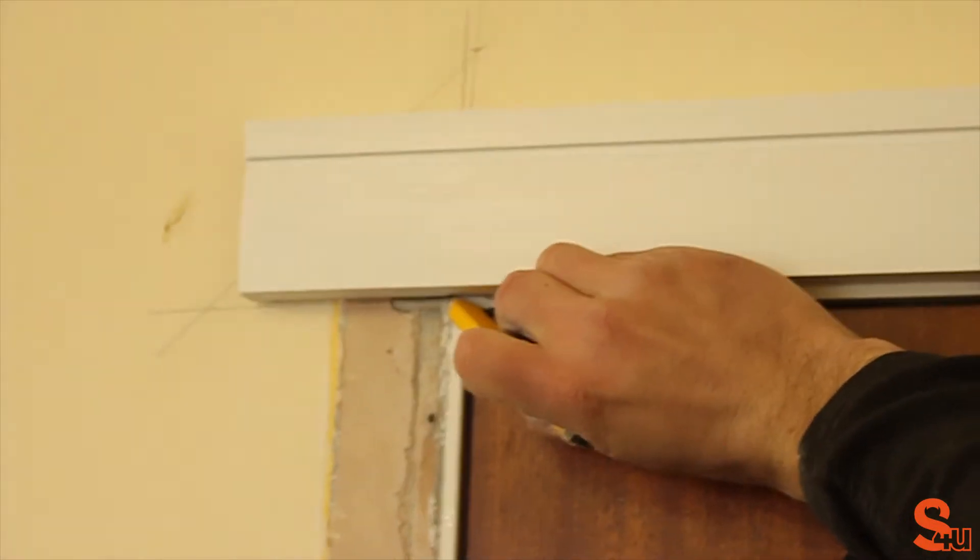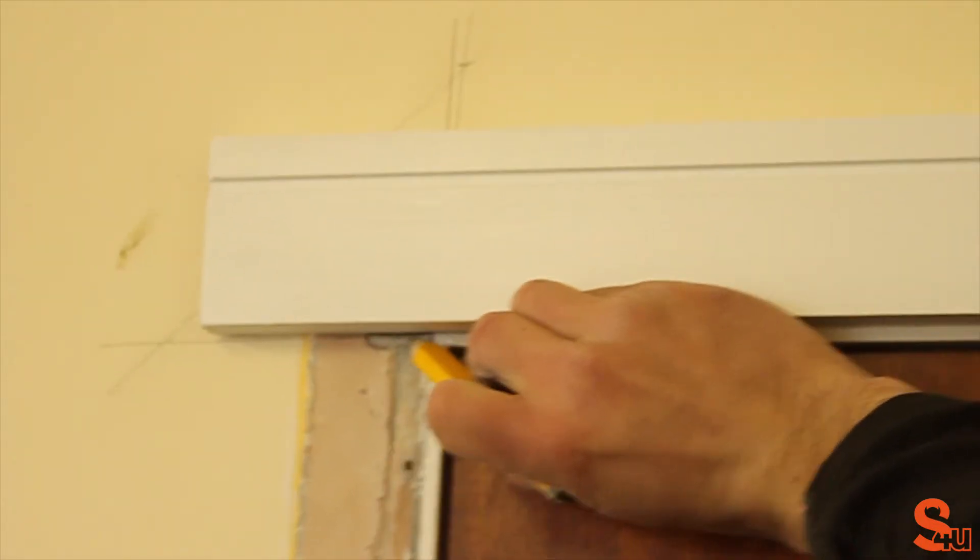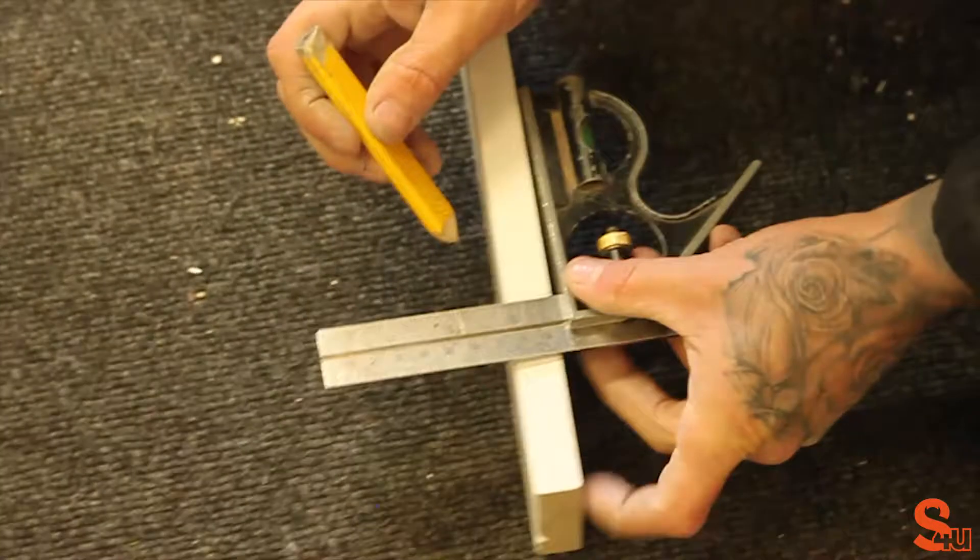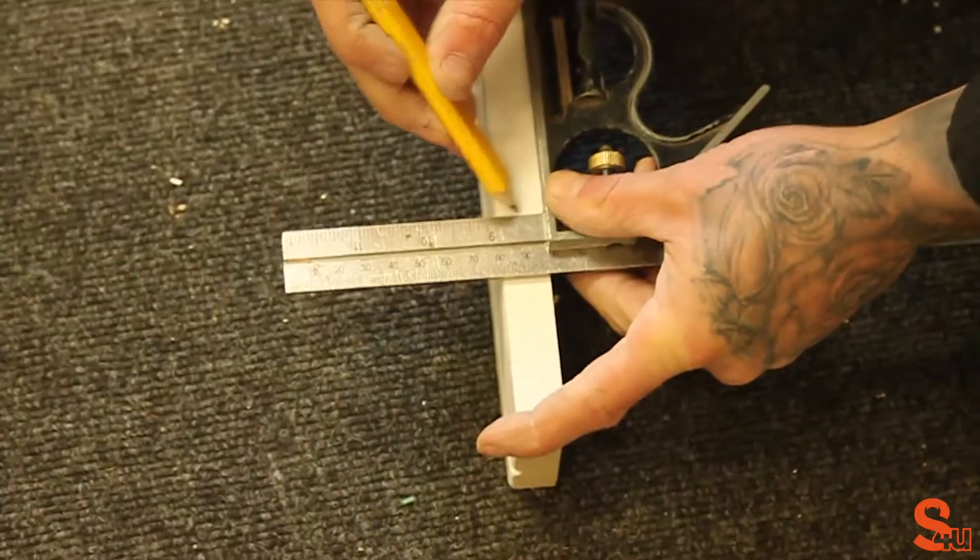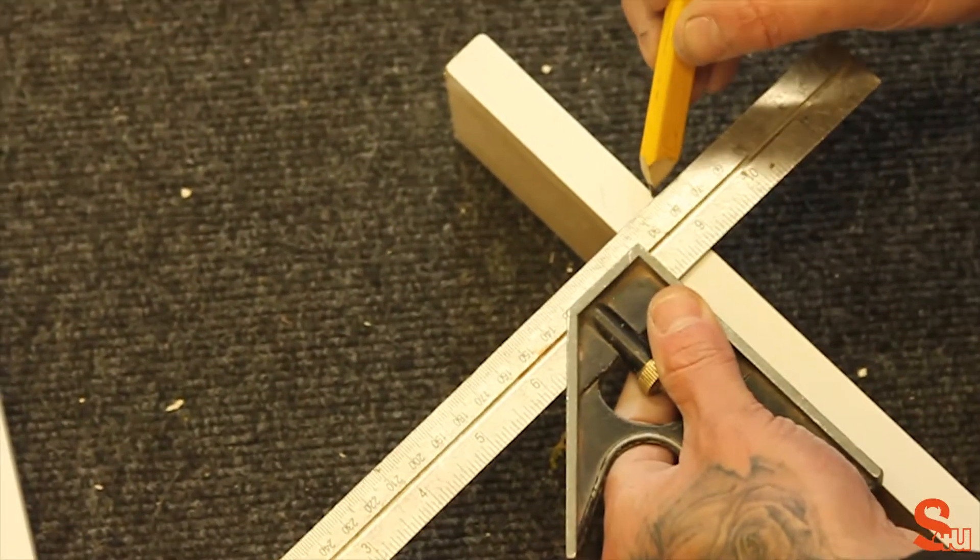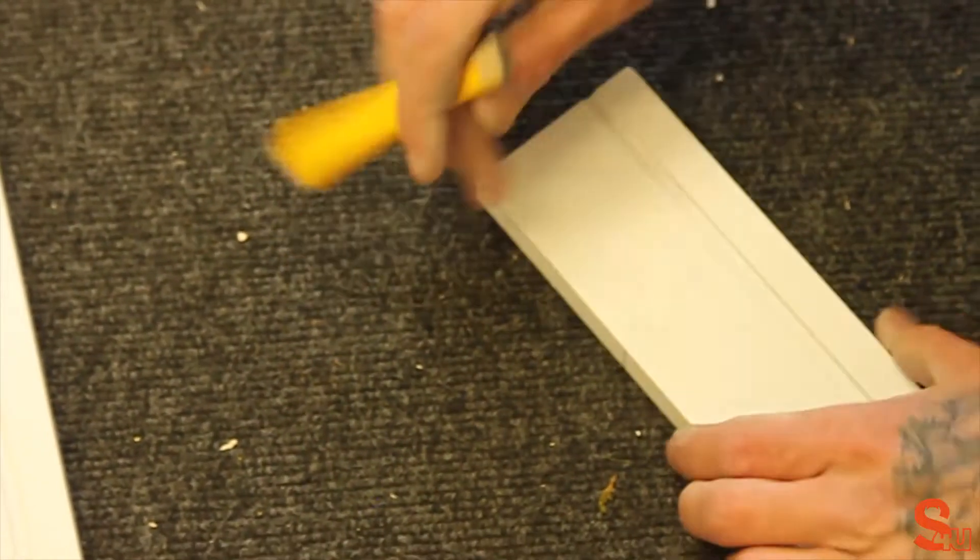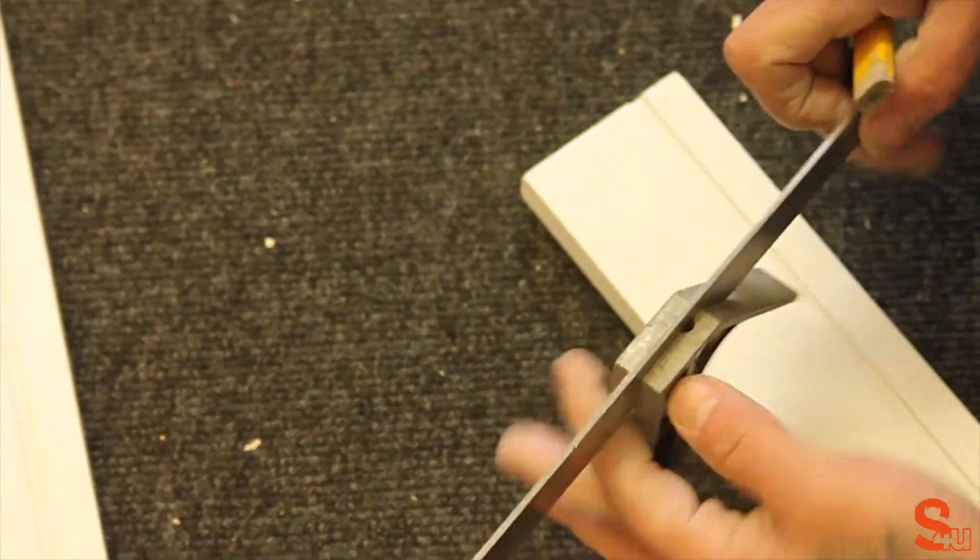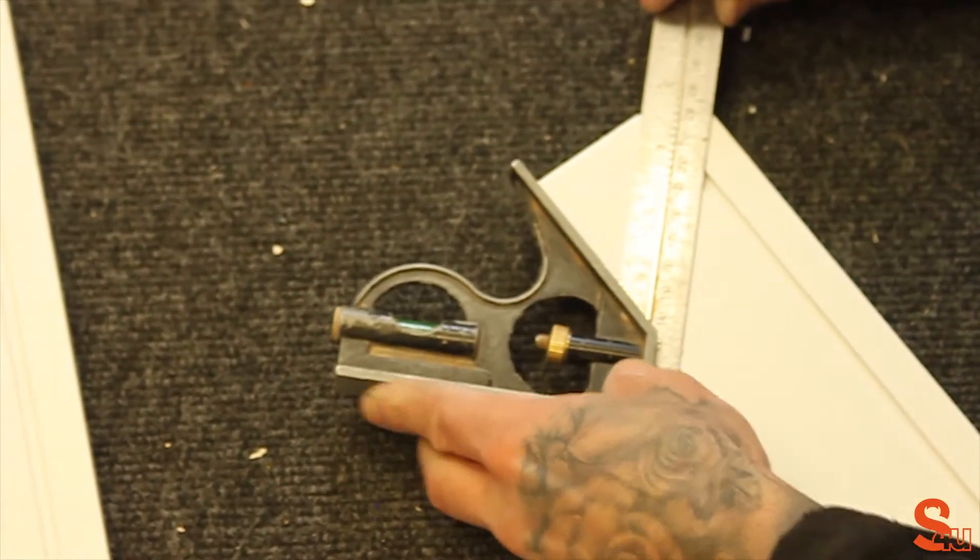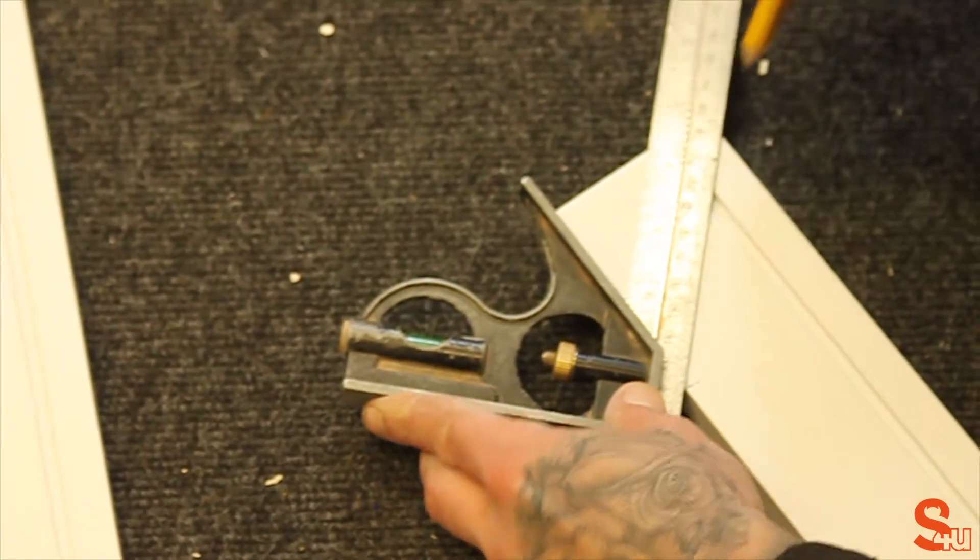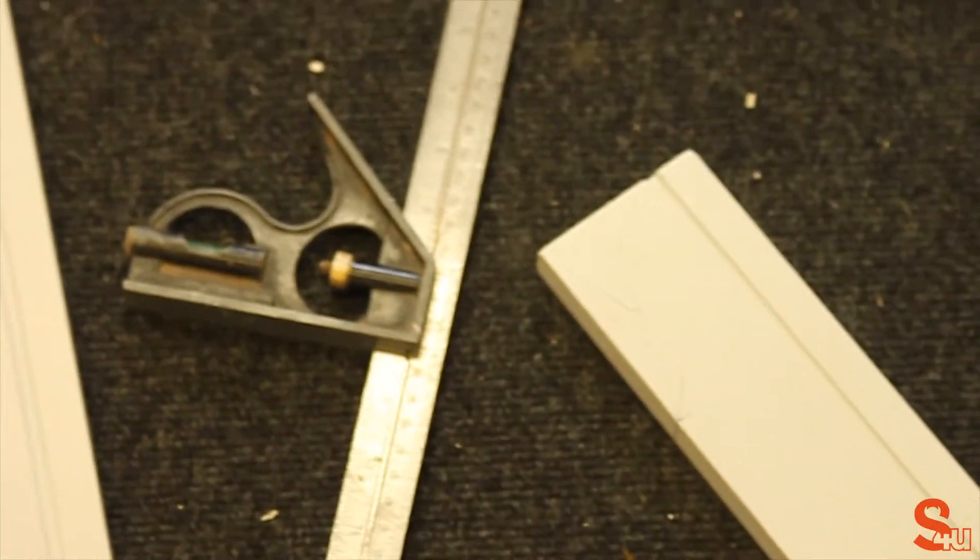This one's a lot more straightforward. Again mark the 5mm, intersect from the bottom, extend the line, and then mark the 45 degree cut.